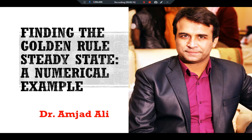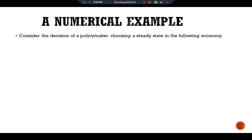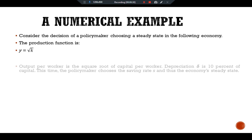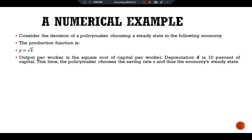Consider the decision of a policymaker choosing a steady state in the following economy. The production function is y equals square root k. Output per worker is the square root of capital per worker. Depreciation delta is 10 percent of capital. This time the policymaker chooses the saving rate s and thus the economy's steady state.